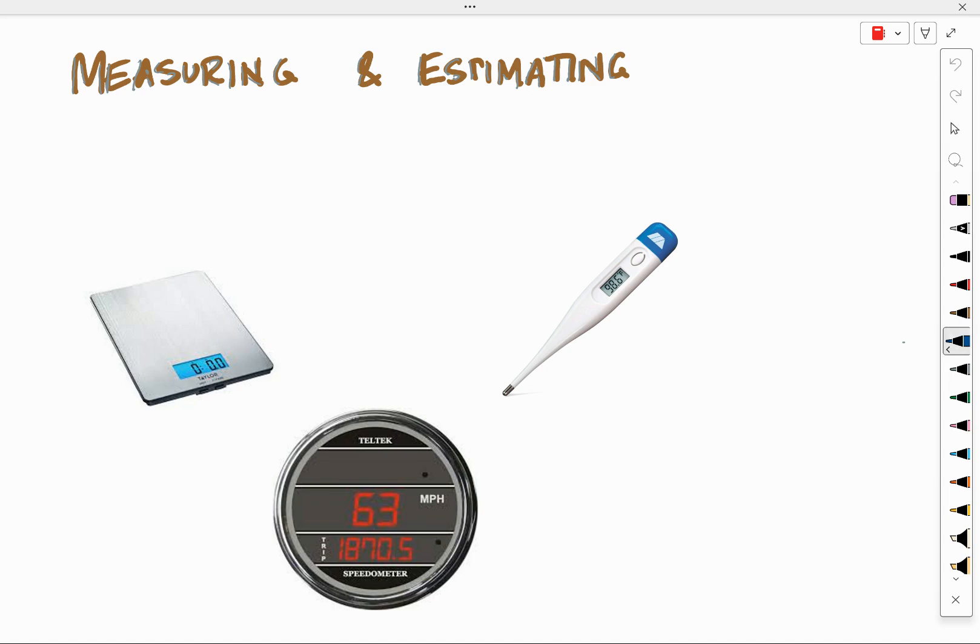The first device is a scale, so that would measure something that we put on it in pounds or ounces or grams.